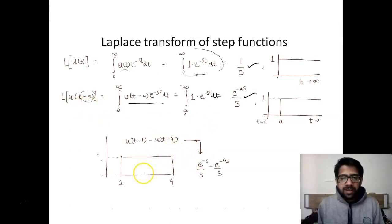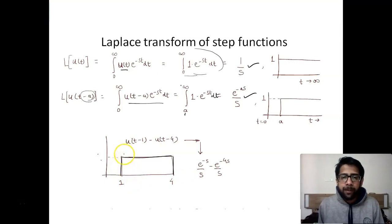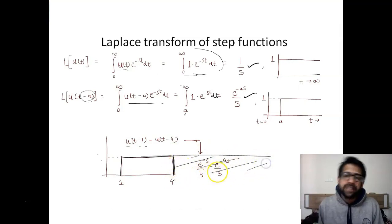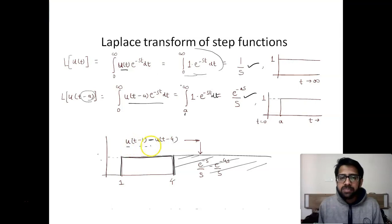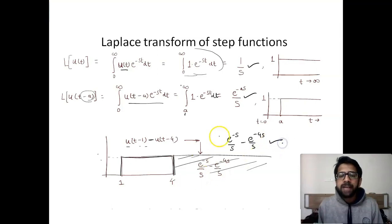For a quick example, let us find the Laplace transform of a square pulse. This square pulse is the combination of u(t minus 1) extending from t equal to 1, minus u(t minus 4) starting at t equal to 4. So the Laplace transform is e raised to minus s upon s, minus e raised to minus 4s upon s.